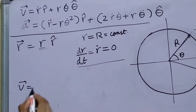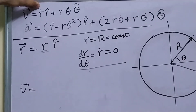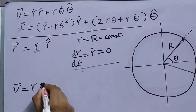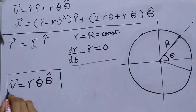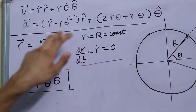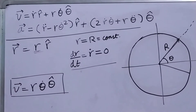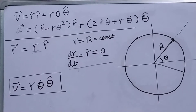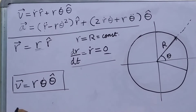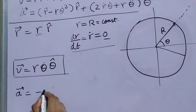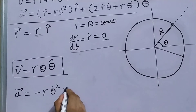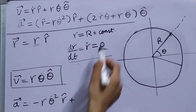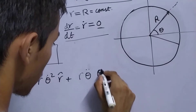We get velocity v where r-dot is zero, so there is no component in the r-cap direction — that term is zero. We are left with r·θ-dot·θ-cap. And putting r-dot equal to zero in the formula for acceleration: r-double-dot is also zero because r-dot is constant. We are left with minus r·θ-dot²·r-cap, and the 2·r-dot·θ-dot term goes away since r-dot is zero. We are left with r·θ-double-dot·θ-cap.